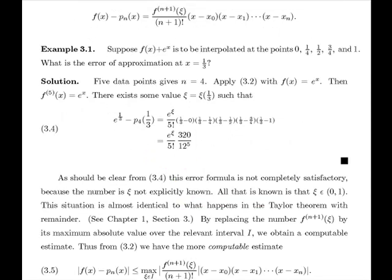Here's our first example. We're going to look at the function f of x that equals e to the x, and it's to be interpolated at these five points. So that's five equally spaced points in the interval zero to one. What's the error of approximation at one-third?